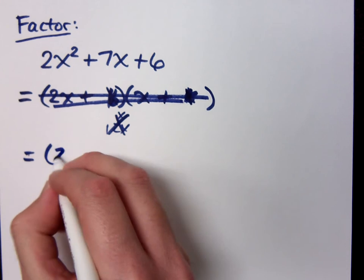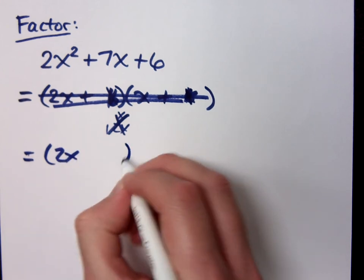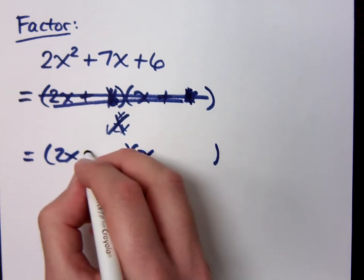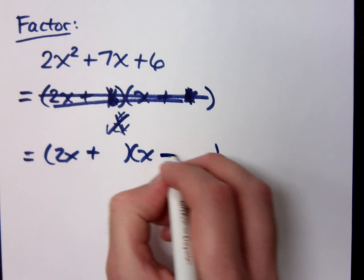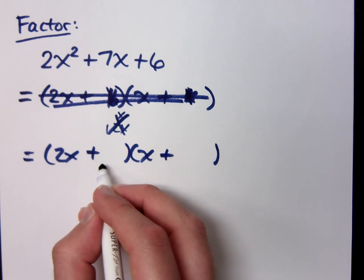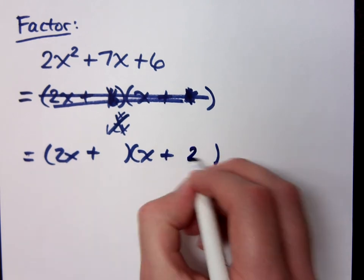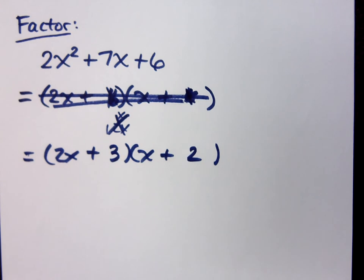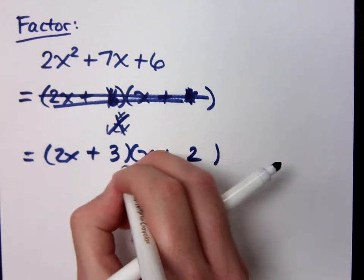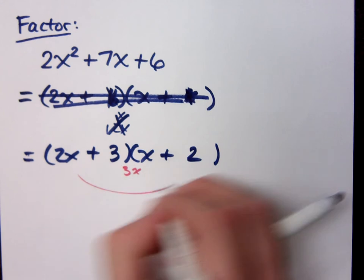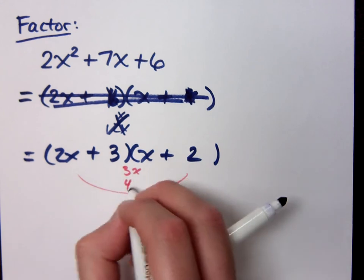So when I go back and I do the 2x and x, we saw that 6 and 1 would never work. I have to use 2 and 3. What cannot go here based on what I just told you? 2. So the 2 must go here. The 3 has to go here. Does that work out? Yes. I get 3x and I get 4x.